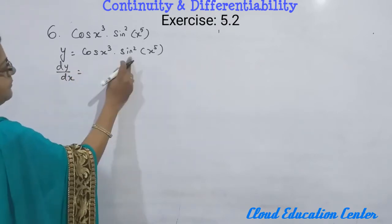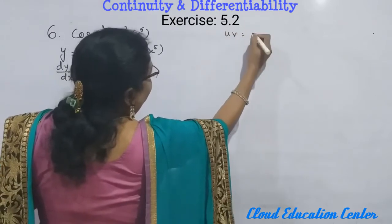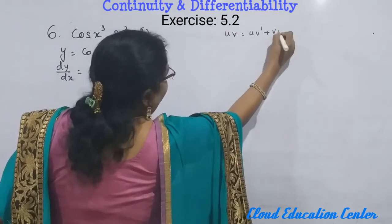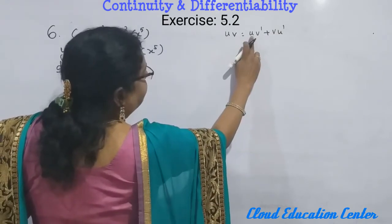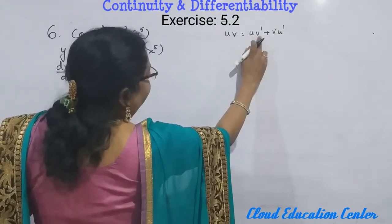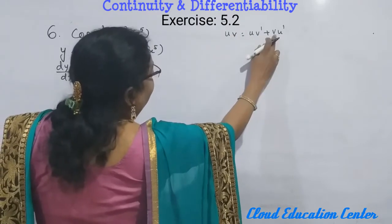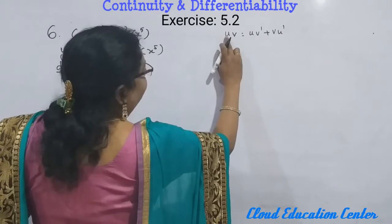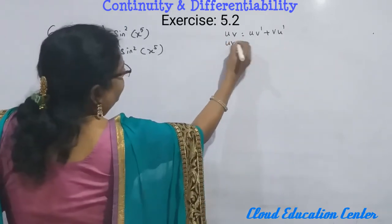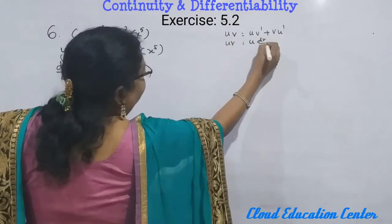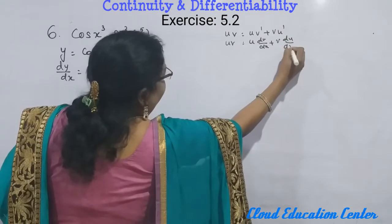First we have to substitute the product rule. The product rule for uv is: uv dash plus v u dash. That means whatever comes in the first term, you write as it is, then differentiate the second term. Then add it, write the second term as it is, and differentiate the first term. You can write: u dv/dx plus v du/dx.